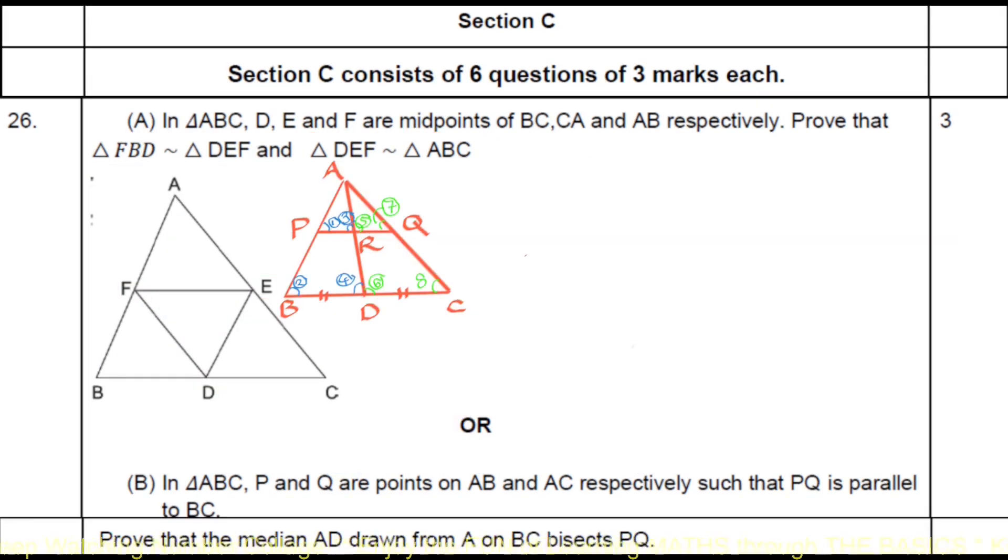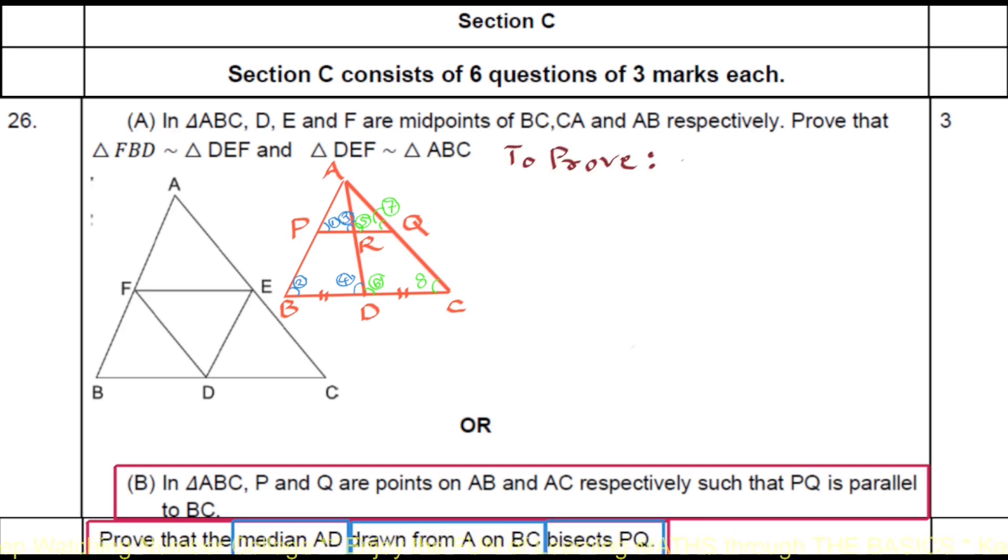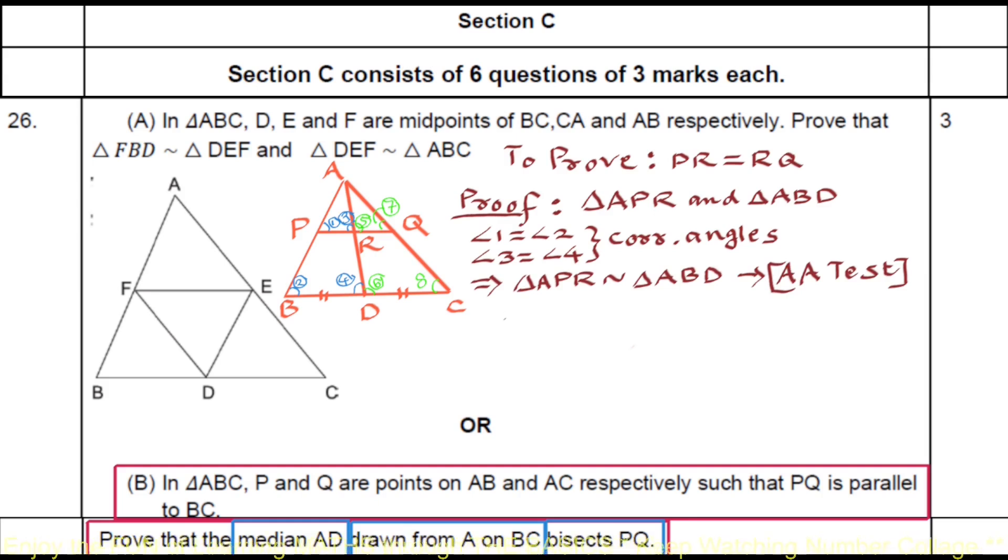This figure in red is drawn according to the things given in sub question B, in which we have to prove that median AD drawn from A on BC bisects PQ, that means we have to prove PR equals RQ. Proof. In triangle APR and triangle ABD, angle 1 equals angle 2 and angle 3 equals angle 4, corresponding angles, which implies triangle APR similar triangle ABD by AA test. So we can write AR upon AD equals PR upon BD, CPST as for similar triangles.